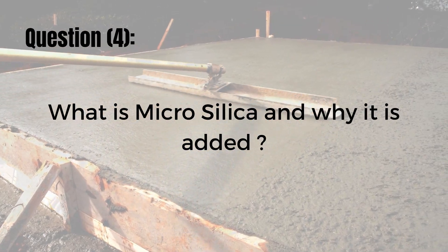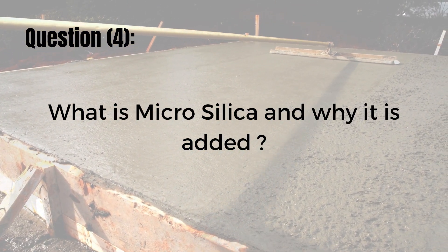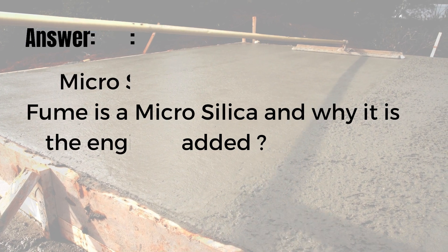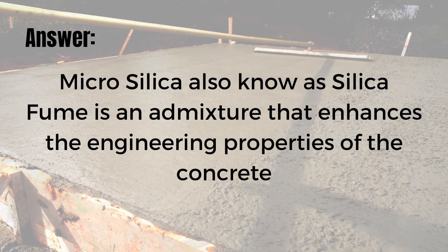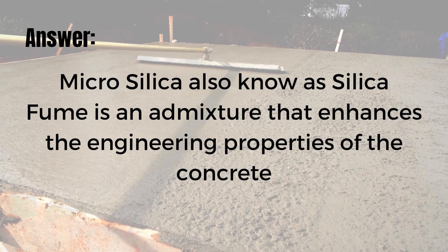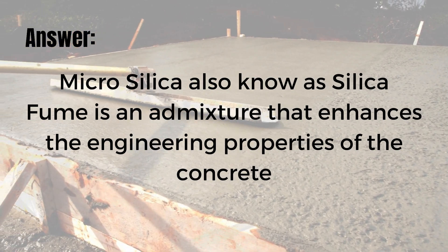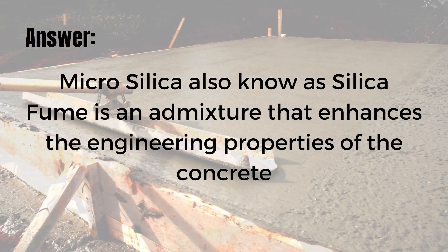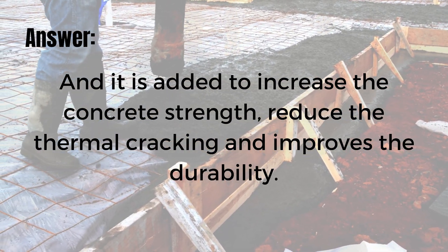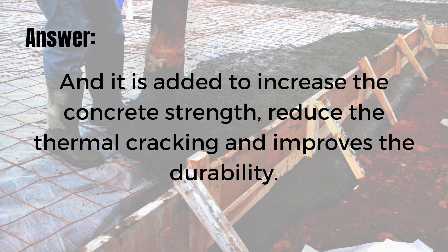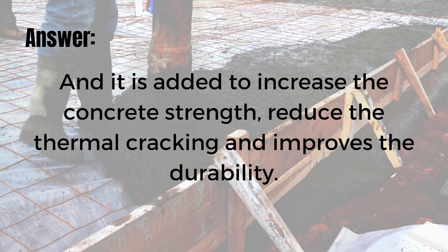Question number four is: what is micro silica and why is it added to concrete? Micro silica, also known as silica fume, is an admixture that enhances the engineering properties of concrete. It is added to increase concrete strength, reduce thermal cracking, and improve durability.